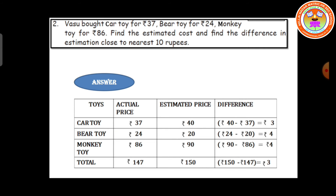Then monkey toy: actual price is 86 rupees. 6 is greater than 5, so add plus 1 to the previous digit: 8 plus 1 is 9, so the estimated price is 90 rupees. The difference is 90 rupees minus 86 rupees, equal to 4 rupees. Now find the total of actual price and estimated price. The total actual price is 147 rupees, estimated price is 150 rupees, and the difference is 3 rupees. Is it clear, students?